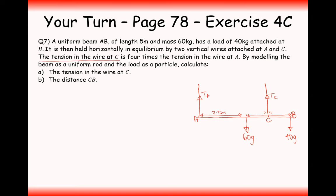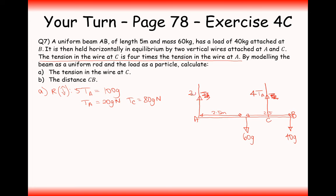We can also include on the diagram that the tension in the wire at C is 4 times the tension in the wire at A. So instead of writing TC, we take the tension at A and multiply by 4 to get the tension at C. Using strategy one, resolving upwards and downwards: 5 lots of tension at A balances the downward forces of 100G. Therefore TA is 20G newtons and TC is 80G newtons.